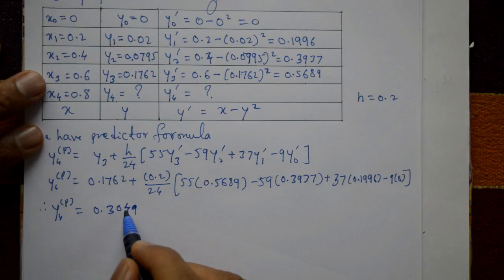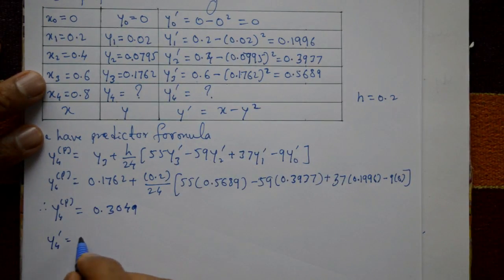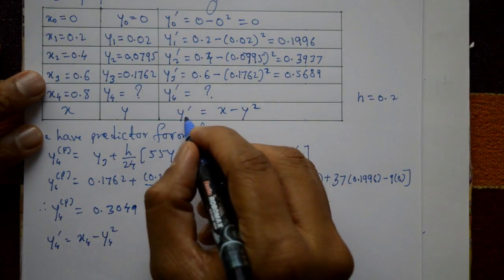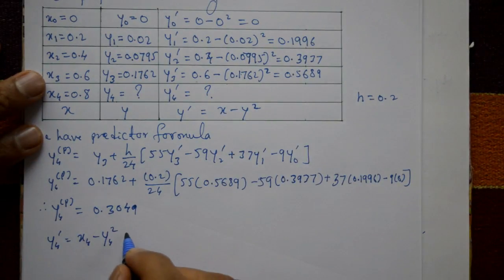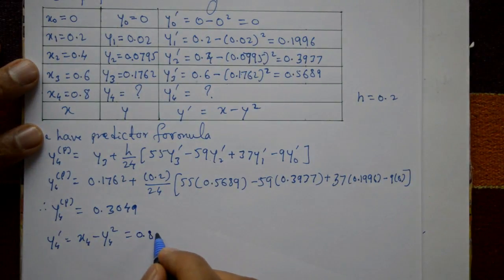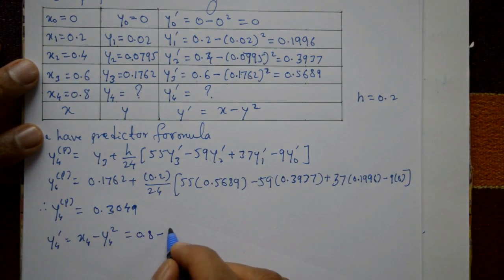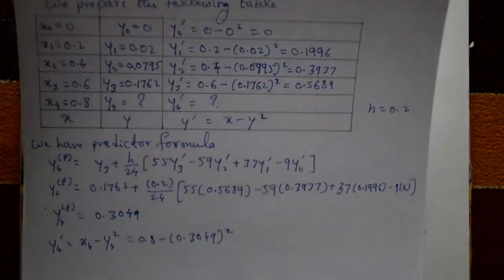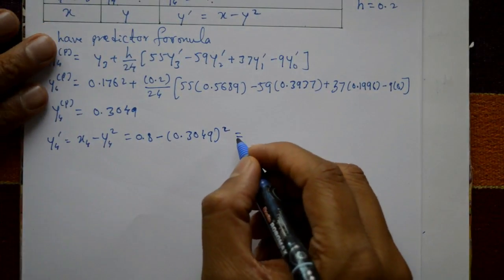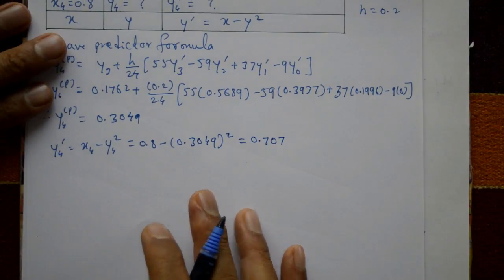From the predictor value, we also find y'₄. Since y' = x − y², we get y'₄ = 0.8 − (0.3049)² = 0.707.